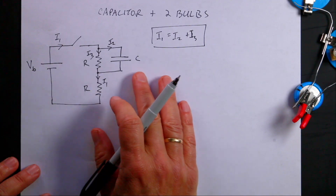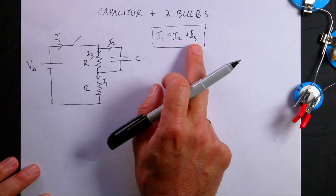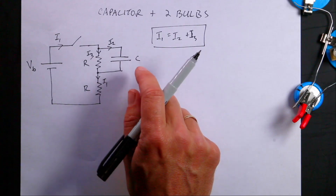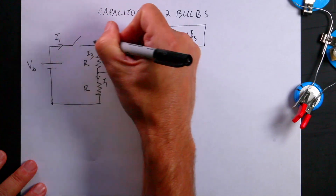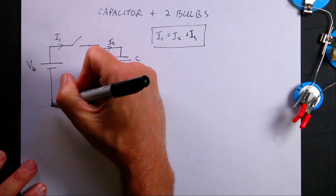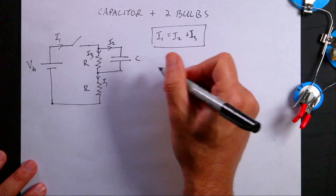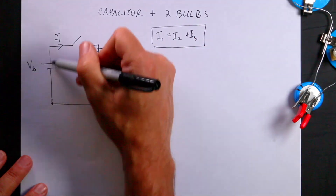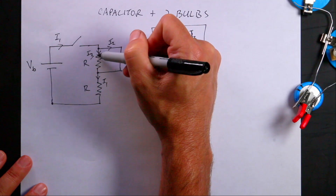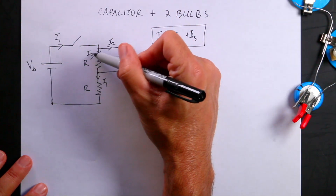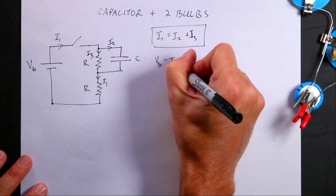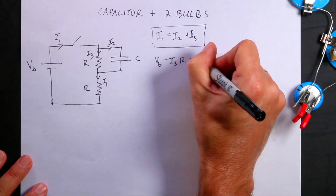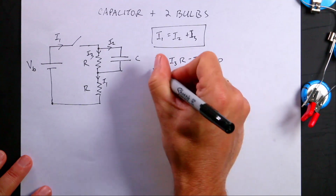Now let's look at the loop rule. I actually have three loops, and there are only three unknown currents, so I'd only need two loop equations. Starting with the first loop: going around it, I cross the battery for a voltage VB, then I go across a resistor in the same direction as I3, giving minus I3·R, and then minus I1·R. That has to add up to zero.